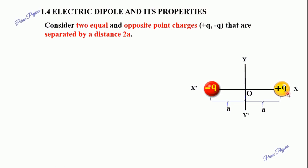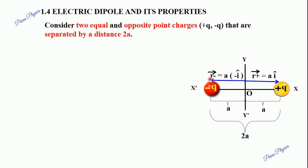Two point charges plus q and minus q are separated by a small distance 2a. The position vector r-plus is equal to a·î. From the origin, the positive point charge is at distance a, and we multiply by the unit vector î. The position vector r-minus is equal to minus a·î, so in the minus x-direction the unit vector is minus î.